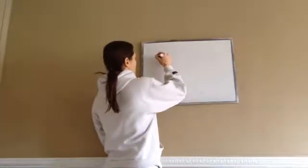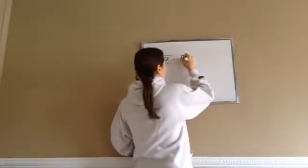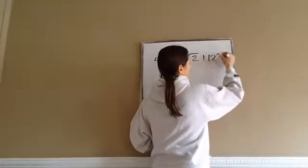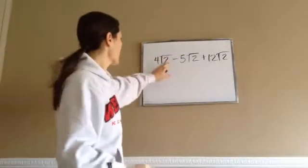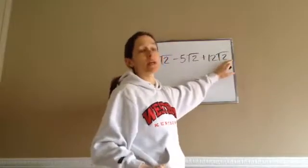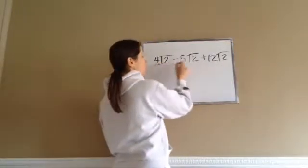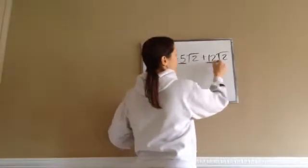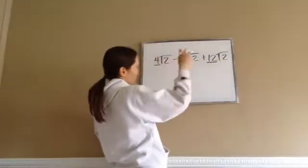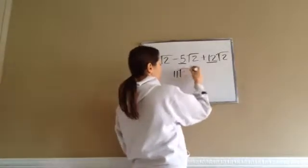For example, let's say you see 4 square root of 2 minus 5 square root of 2 plus 12 square root of 2. Because we have something square root of 2, something square root of 2, something square root of 2, these are like terms. So you can actually add your numbers: 4 minus 5 plus 12. 4 minus 5 is negative 1, plus 12 would be 11. So that would be 11 square root of 2.